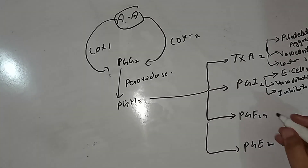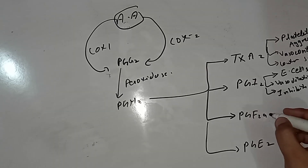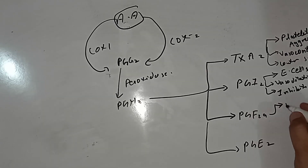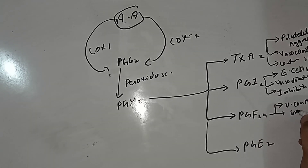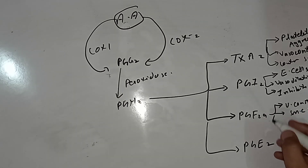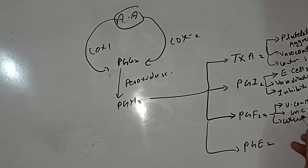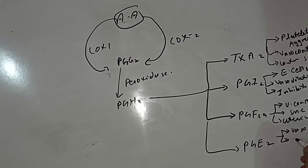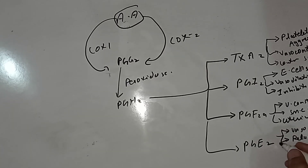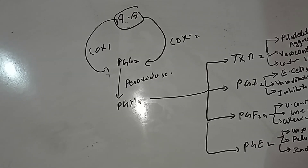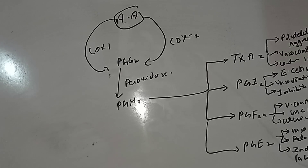Prostaglandin F2-alpha is involved in vasoconstriction, smooth muscle cell constriction, and promotes uterine contraction. Prostaglandin E2 is involved in vasodilation and relaxation of smooth muscle, and can be used to reduce labor — meaning it can promote uterine contractions.